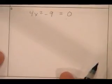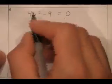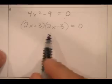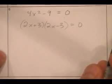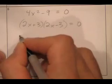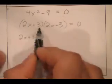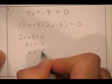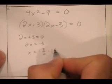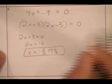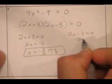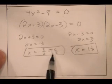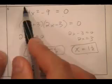Four x squared minus nine equals zero — that's a difference of two squares. So I get (two x plus three)(two x minus three) equals zero. When two x plus three equals zero, two x equals negative three, so x equals negative three halves. When two x minus three equals zero, two x equals three, so x equals positive three halves. So x equals negative one and a half or positive one and a half.